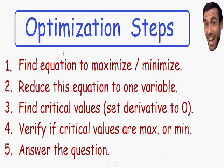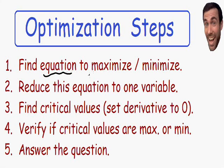To start off, I listed all of the steps that can be used for any type of optimization problem. Step number one says to find the equation to maximize or minimize. This step is usually the most difficult because this equation is never given to you — you have to use your intuition to find it. Let me show you what I mean by going over an example.